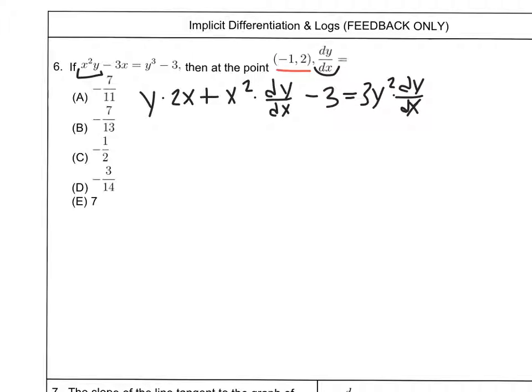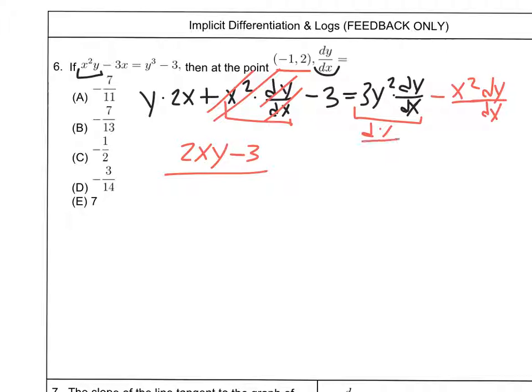You might find it easier to plug in the point now instead of actually doing all this stuff out, but if you'd rather get the dy/dx by itself first, that's okay too. That's a more useful skill for other problems. Let's cluster the dy/dx stuff on one side. So we'd have 2xy minus 3, and I'm going to factor out a dy/dx of 3y² minus x². When I divide that we get dy/dx equals 2xy minus 3 over 3y² minus x².